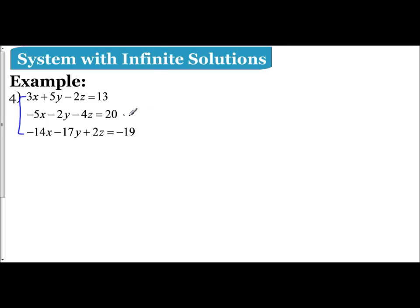And if I look at my second and my third equation, 2z, negative 4z, all I'd have to do is just multiply this one by 2, and that would create an opposite here. So, I'm going to eliminate my z variable.